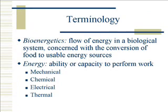These next couple slides we're going to look at some terminology. First is the definition of bioenergetics, which is the flow of energy in a biological system concerned with the conversion of food to usable energy sources. Do you remember your energy-yielding nutrients? So those are things that we take in through food that we consume, digest and absorb, that we can store in the body and then later be converted into the usable energy, which we'll talk a lot about, is ATP or adenosine triphosphate.